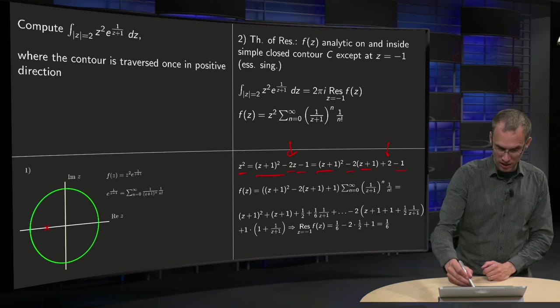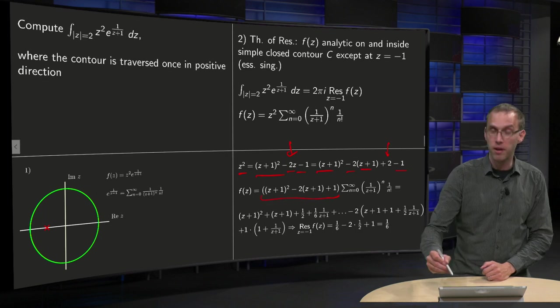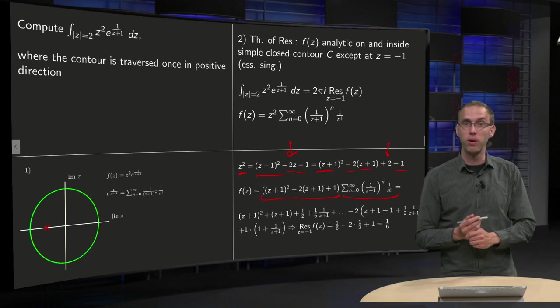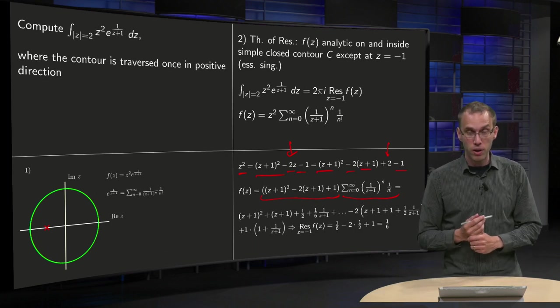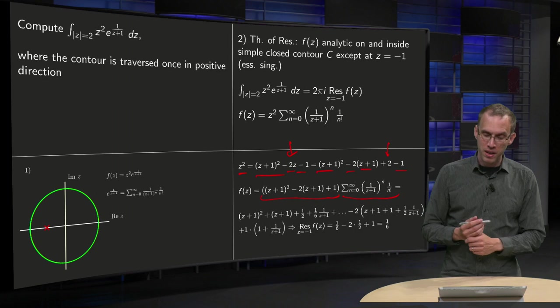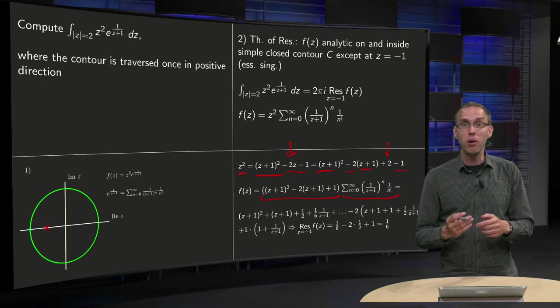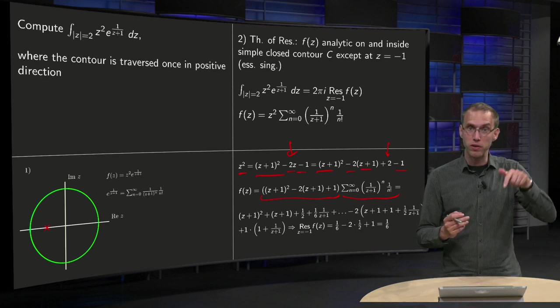So your whole f of z is this long expression over here times your power series of e to the power 1 over z plus 1. And now we can evaluate what we need for the residue.